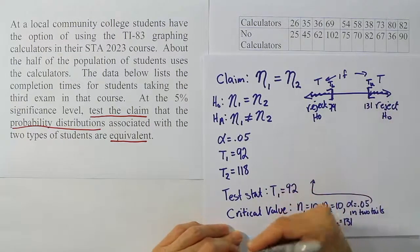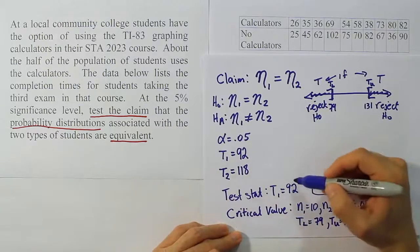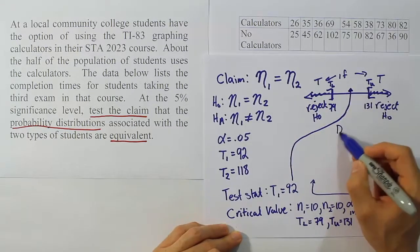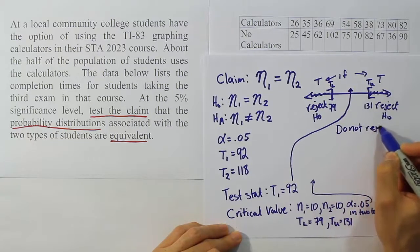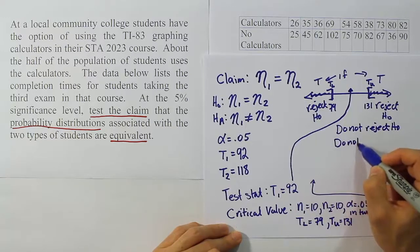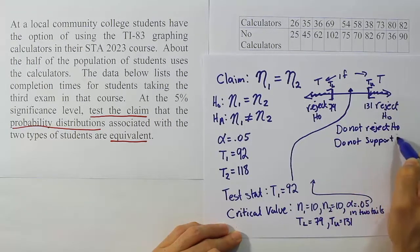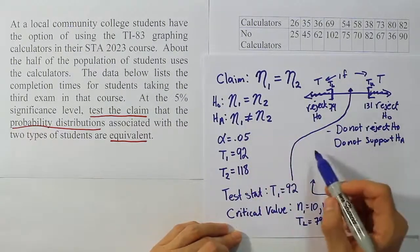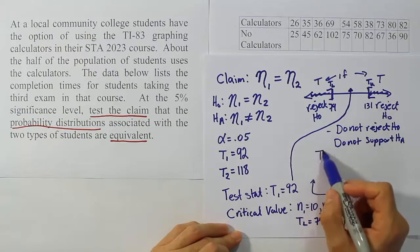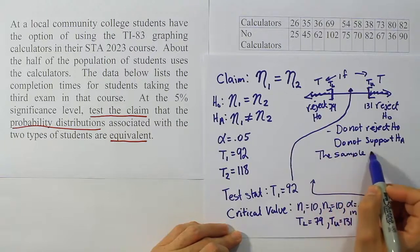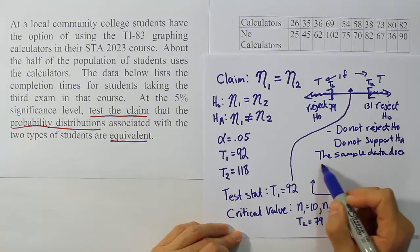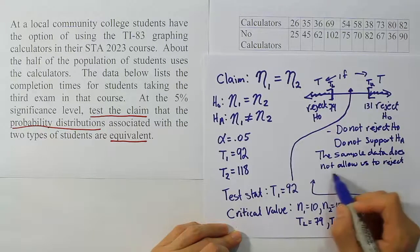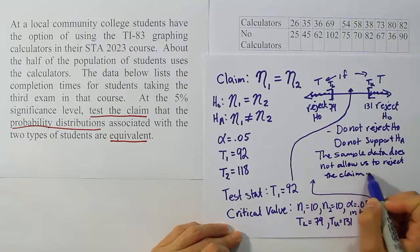Now we're going to look at our test stat. Our test stat is 92. And when we look at our test stat and see where it lands, you see that 92 is over here. So this is in the do not reject H0 area. Do not reject H0. Therefore do not support HA. Our claim though is the same as H0. So do not reject is the proper wording here. So we're going to say the sample data does not allow us to reject the claim.